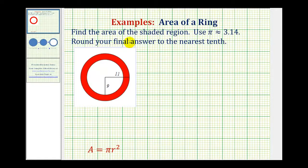In this example, we want to find the area of the red shaded region, or the area of this red ring. Because this involves circles, we'll need the area formula for a circle, which is area equals pi r squared, where r is the length of the radius. We're also told to use approximately 3.14 for pi, and to round the final answer to the nearest tenth.